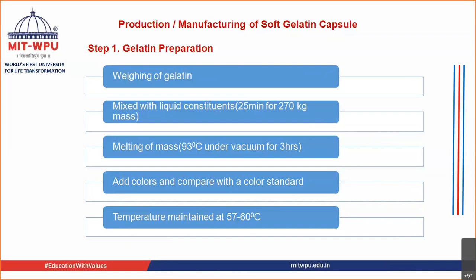When producing soft gelatin capsules, there are approximately 13 to 14 steps involved. The first step is preparation of the gelatin solution, similar to what we did for hard gelatin capsules. You weigh the gelatin, mix it with water, and melt it at 93 degrees Celsius under vacuum for about 3 hours.